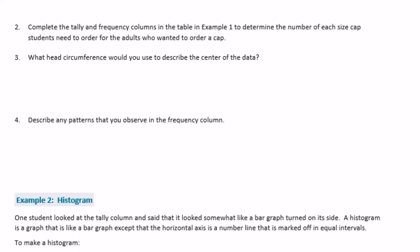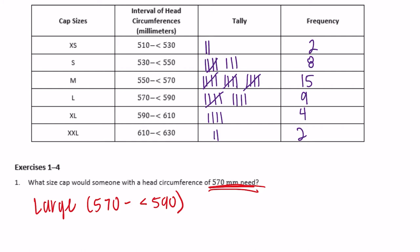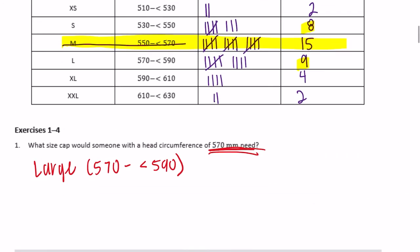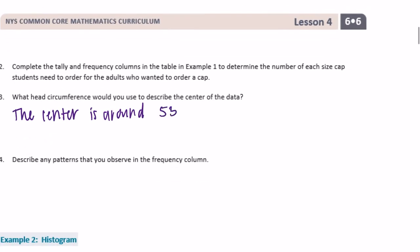What head circumference would you use to describe the center of the data? The center looks to be around the interval with frequency 15, because 8 and 9 are close to that on either side. So the center of the data is around a size medium — 550 to less than 570 millimeters.